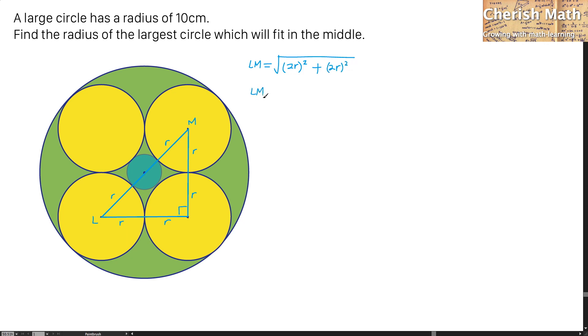And the length of the LM is in fact, I got it as the square root of 8R squared. So I will just have to simplify this part as 2 square root 2R.